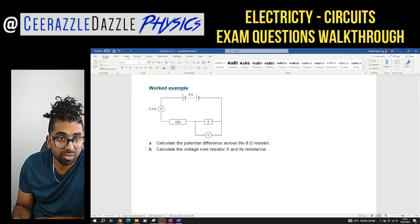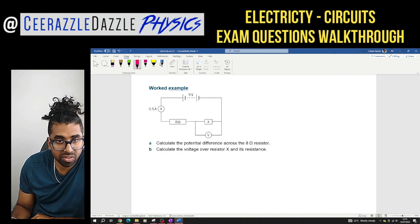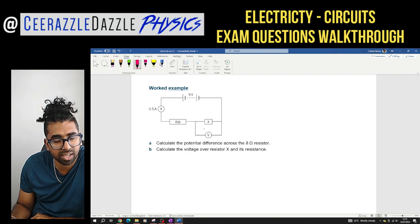Okay, so here are the three questions. Here's the first one, number one, worked example. We have a circuit with nine volts over here and 0.5 amps over there. We've got a resistor of eight ohms and an unknown resistor X, and you've got a voltmeter around this resistor over here.